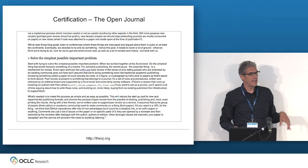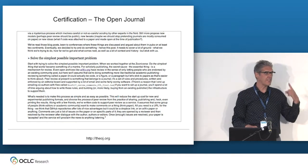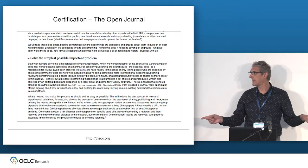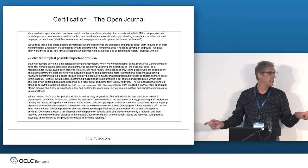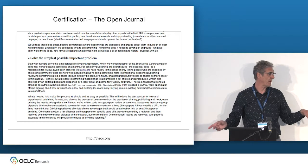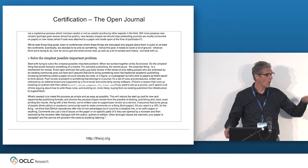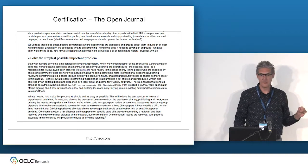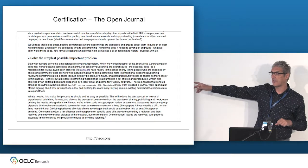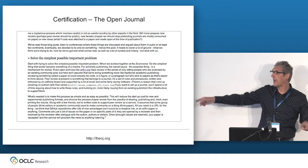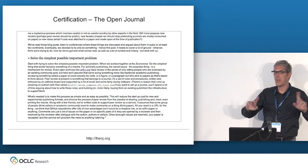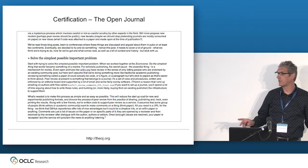Why is this important from the perspective of archiving? Because now there's not one thing you need to archive — there are two interrelated things that you need to archive, and they live in different places on the web. One lives in the physics archive, one in the Open Journal, and there's going to be a connection between those two.